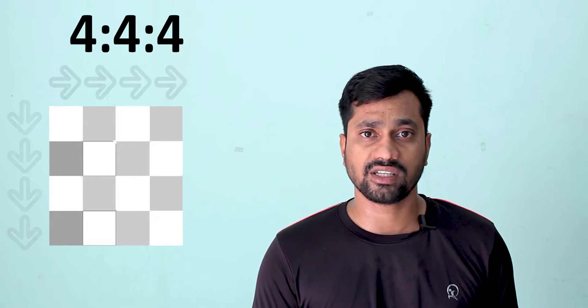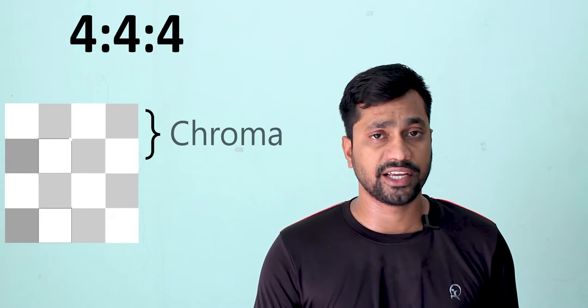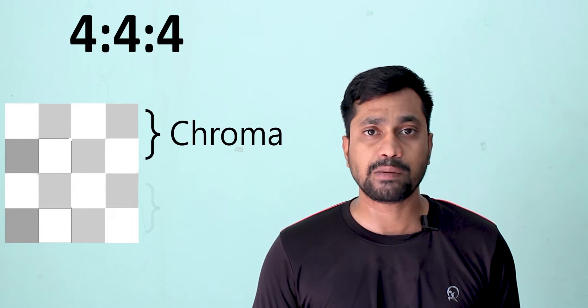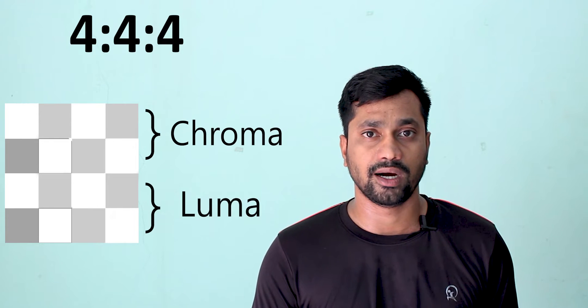In 4:4:4 chroma subsampling, the first number four represents how many pixel blocks we are taking — four horizontal and four vertical pixel blocks. In these four rows of pixel blocks, the first two rows are dedicated for chroma and the bottom two rows are dedicated for luma.